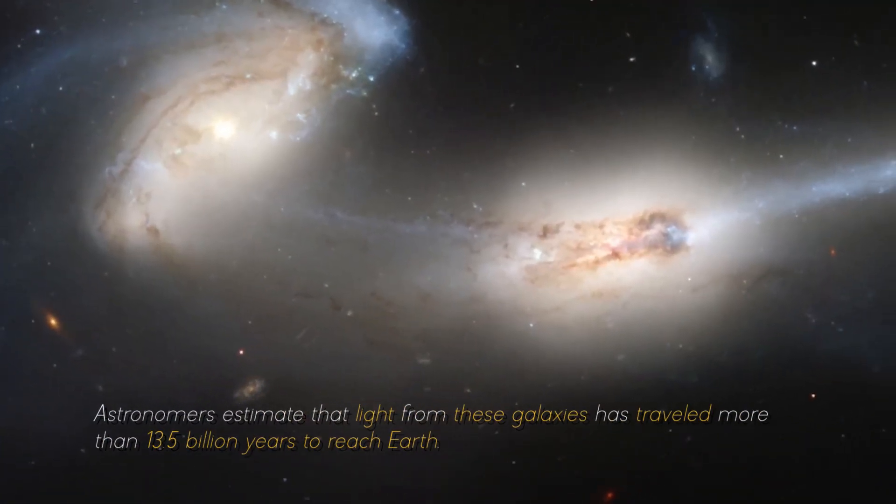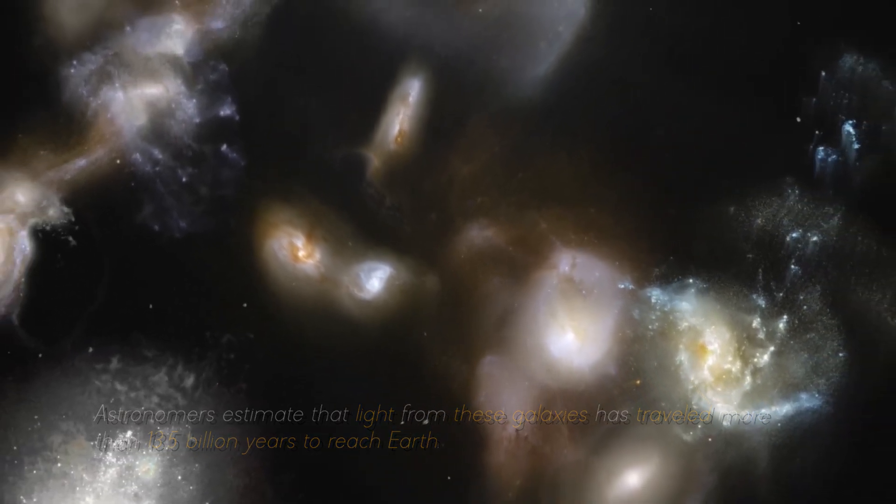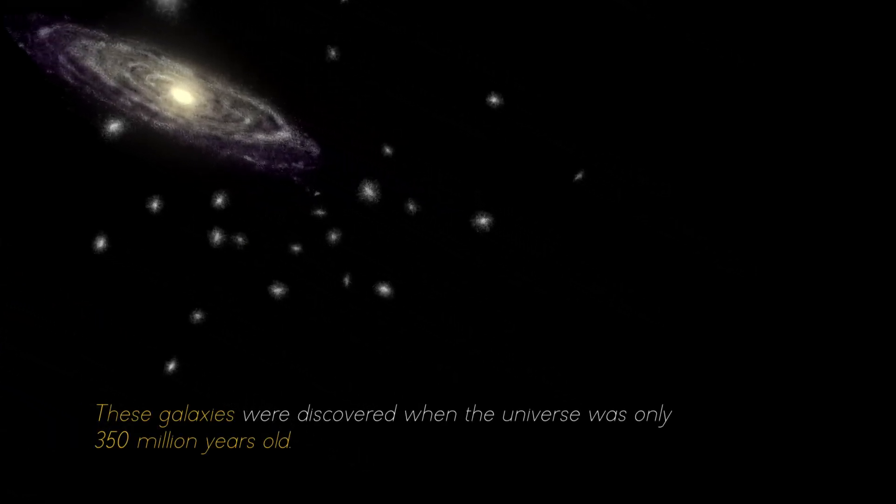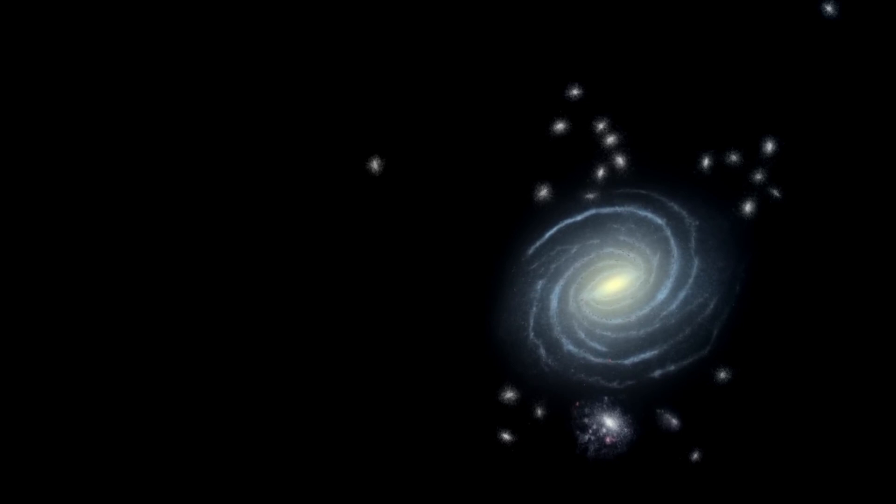Astronomers estimate that light from these galaxies has traveled more than 13.5 billion years to reach Earth, giving us a glimpse into the distant past of the universe. These galaxies were discovered when the universe was only 350 million years old, shedding light on how quickly the first generations of galaxies emerged.